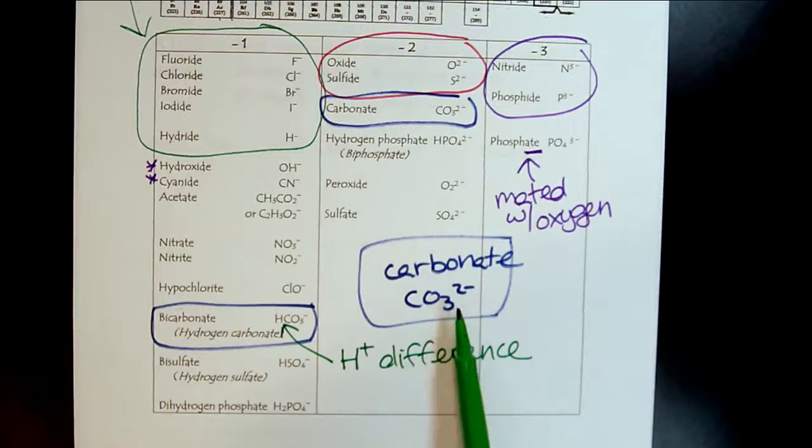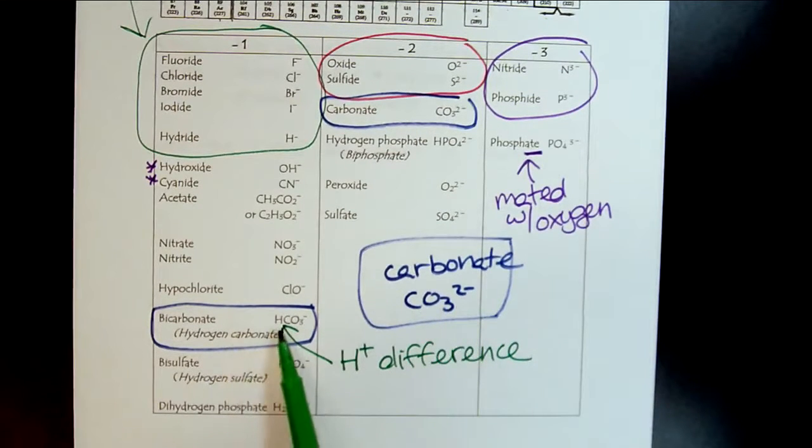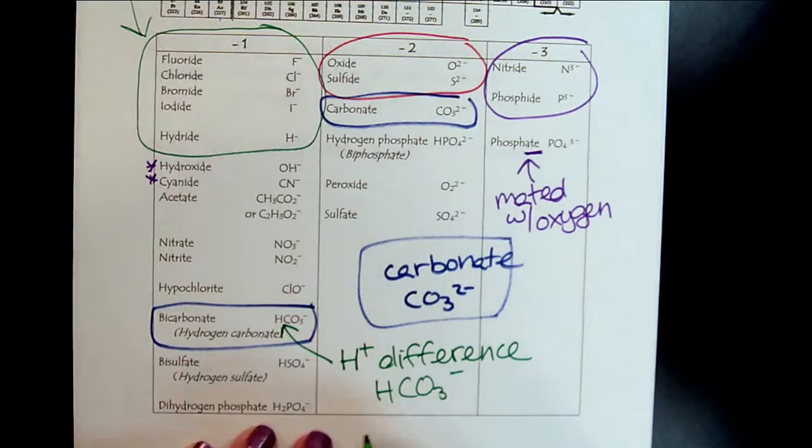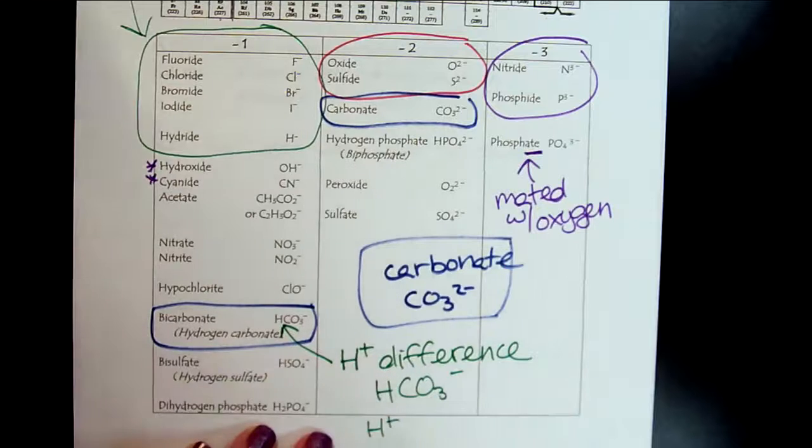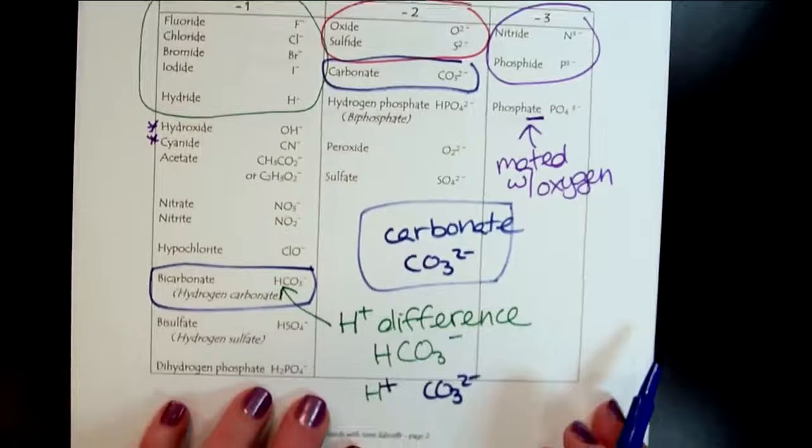If we memorize carbonate as minus two, so then when we look at bicarbonate, we brought together an H plus with a carbonate two minus. So when we have the plus one and the minus two, that's how we get the net minus one.